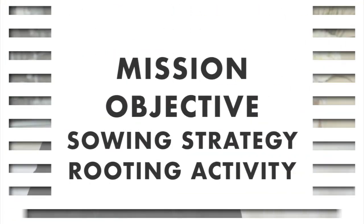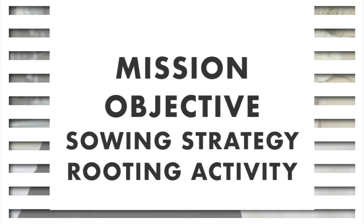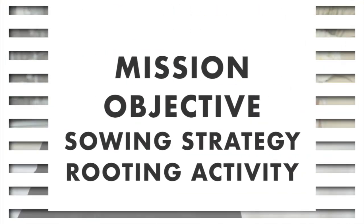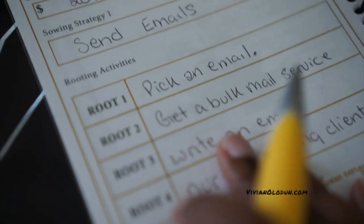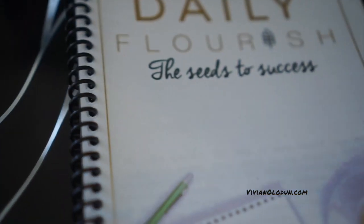So instead of procrastinating, use the Flourish method. Break down your plan into a mission, objective, your sewing strategy, and your rooting activities. I've already broken all of this down into a kind of popular planner that I use with my clients.